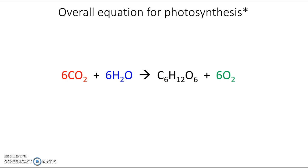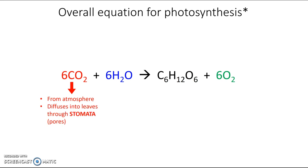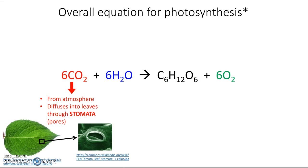Looking at each reactant and product: carbon dioxide comes from the atmosphere and enters the plant via diffusion through special pores called stomata — tiny holes on the underside of a leaf. The water comes from the soil, entering the plant at the roots via the process of osmosis. So both entry processes are based on concentration gradients.